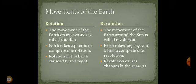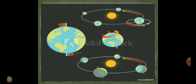Now, movements of the earth. The earth shows two types of movement at the same time. The two types of movements are rotation and revolution. The movement of the earth on its own axis is called rotation, and the movement of the earth around the sun is called revolution. The earth takes 24 hours to complete one rotation, and 365 days and six hours to complete one revolution. Rotation of the earth causes day and night, and revolution causes changes in the seasons.